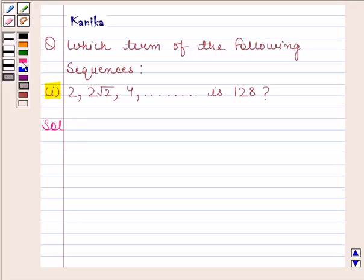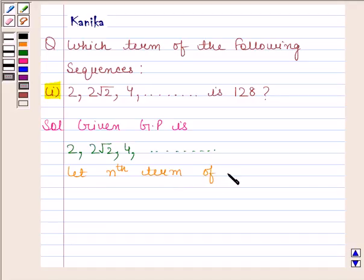Given geometric progression is 2, 2 root 2, 4 and so on. Let nth term of the given GP be 128.